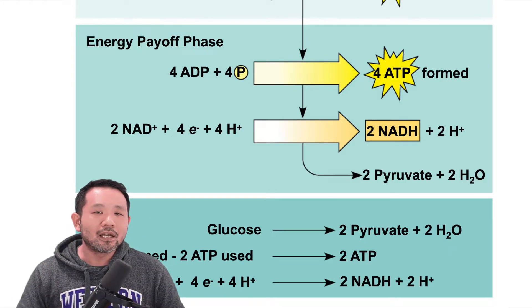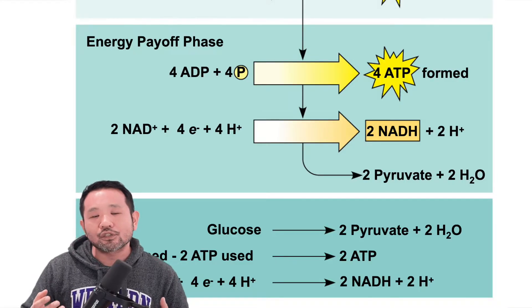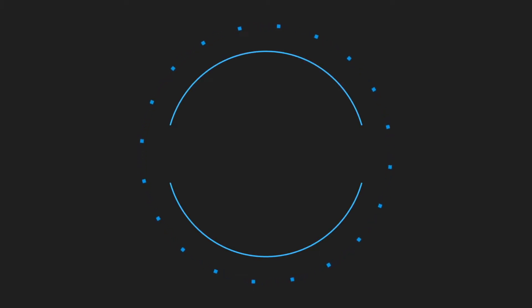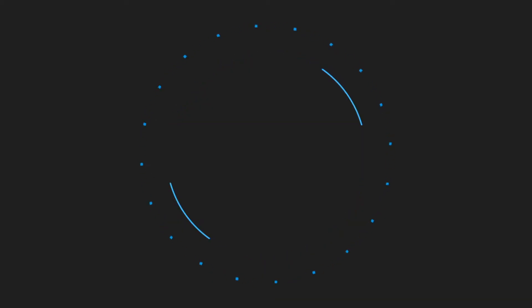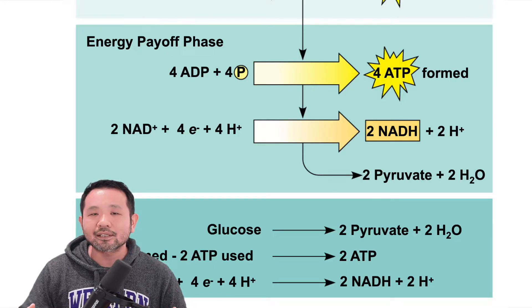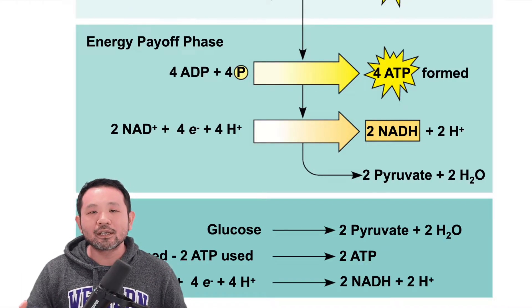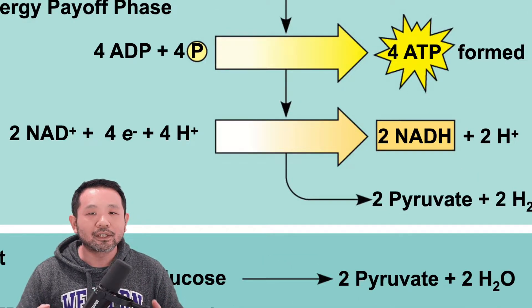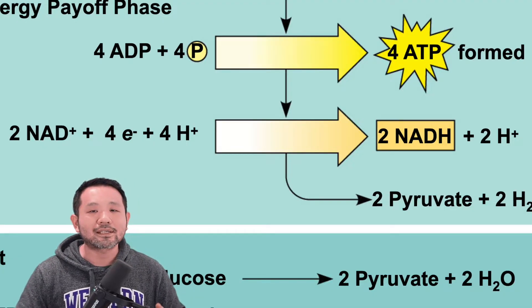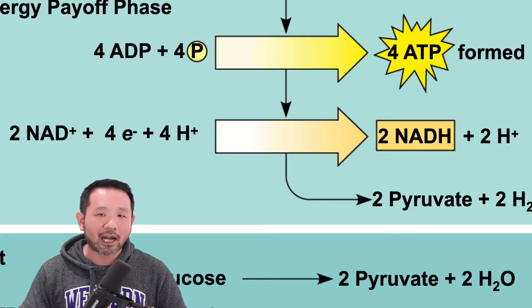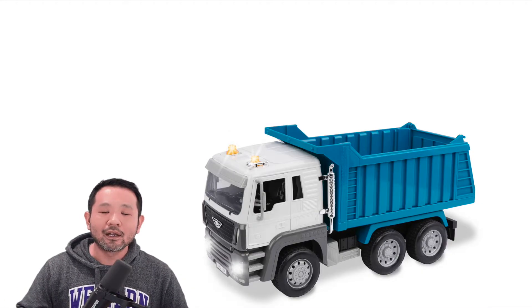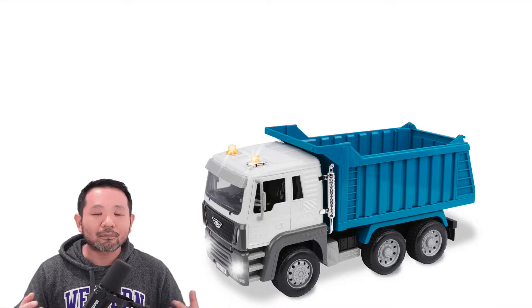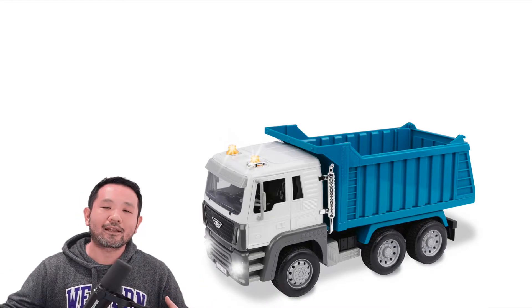As glycolysis takes place, the bonds that hold together a six-carbon sugar are broken in order to create two three-carbon substances. If you think about a circle and you want to create two cords, you'll have to cut that circle at two places. That means we're going to be breaking two covalent bonds in order to get our two pyruvates, meaning potentially four highly energetic electrons are going to be released.